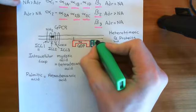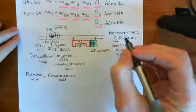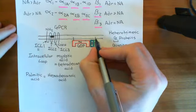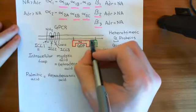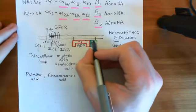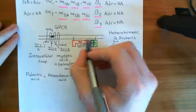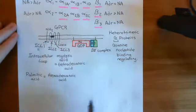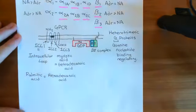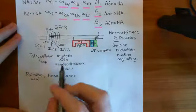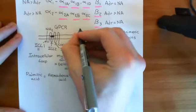The gamma subunit also has a lipid moiety stuck onto it — a long hydrophobic molecule that implants into the inner leaflet of the phospholipid bilayer, holding the beta-gamma complex there. The lipid moiety on the gamma subunit is a prenyl group, which is more complex than myristic or palmitic acid.